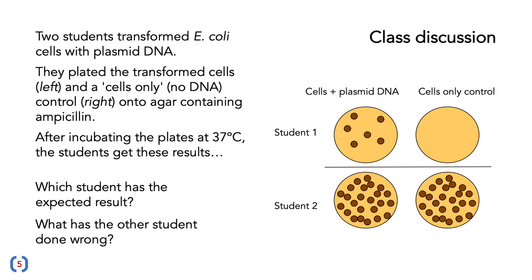Here's another class discussion. We've got a number of different plates with bacterial colonies. On the top is student one, on the bottom student two. On the left are cells plus plasmid DNA, and on the right is a cells-only control. Two students have transformed E. coli cells with plasmid DNA, plated the transformed cells on the left and a cells-only, no-DNA control on the right onto agar containing ampicillin. After incubating at 37°C, they get these particular results. Which student has the expected result, and what has the other student done wrong? Stop the video and think about this.